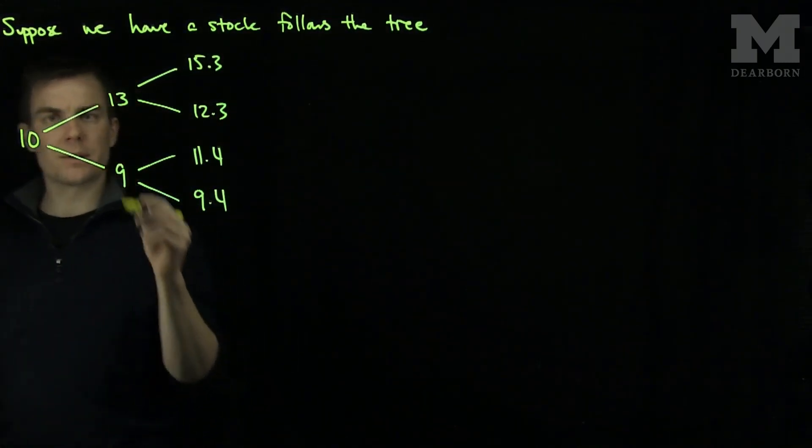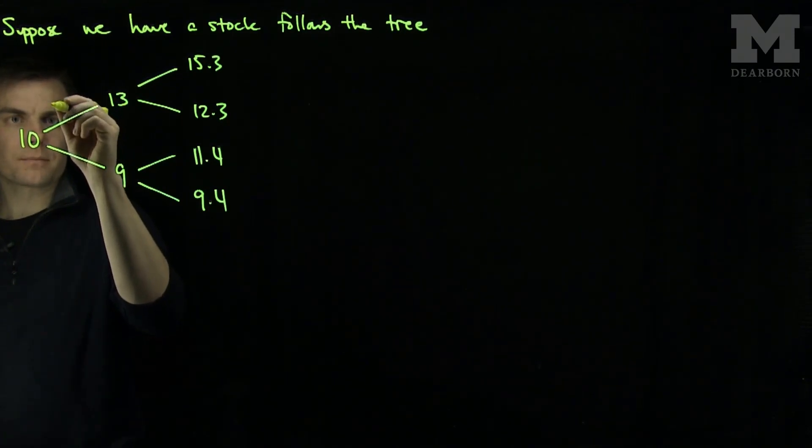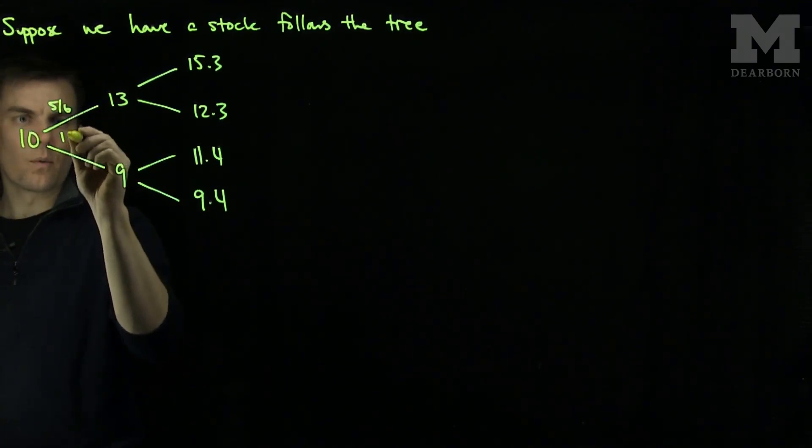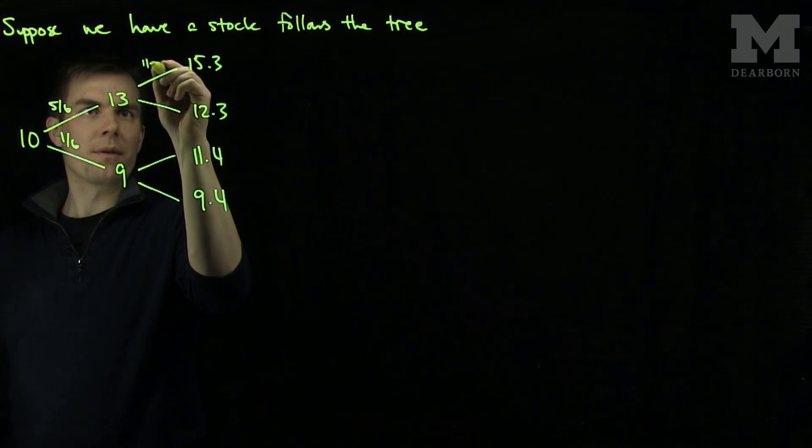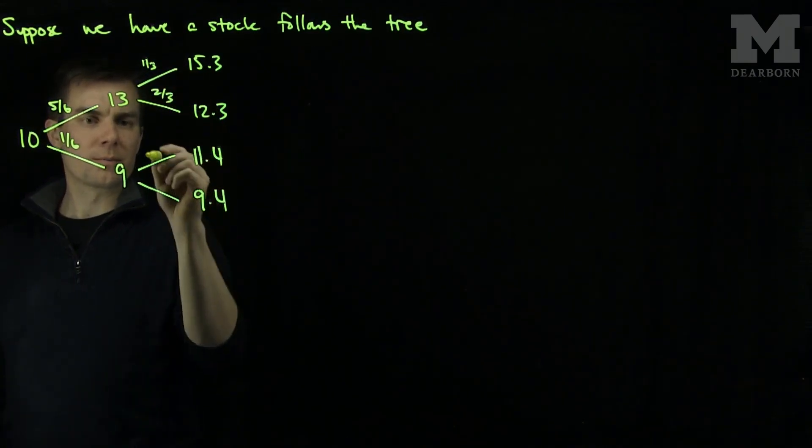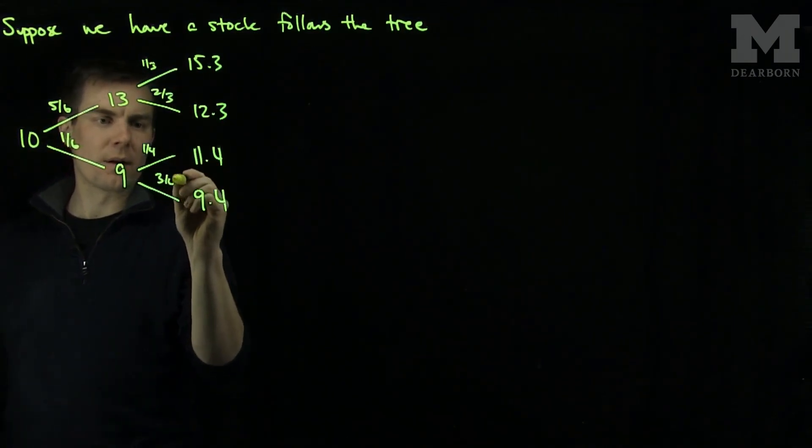And here are the associated probabilities. This will happen with probability 5 sixths, 1 sixth, 1 third, 2 thirds, 1 quarter and 3 quarters.